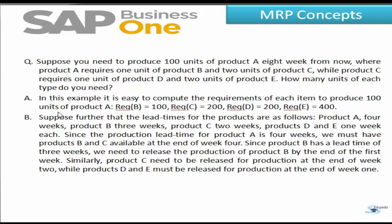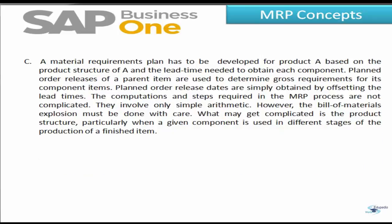Now let us suppose that there are lead times for the products involved. Product A has four weeks of lead time, product B has three weeks, product C has two weeks, and products D and E have one week. Considering that the production lead time for product A is four weeks, we must have product B and C available at the end of week four. Since product B has a lead time of three weeks, we need to release its production by the end of week one. Product C must be released at the end of week two, while D and E must be released by the end of week one.